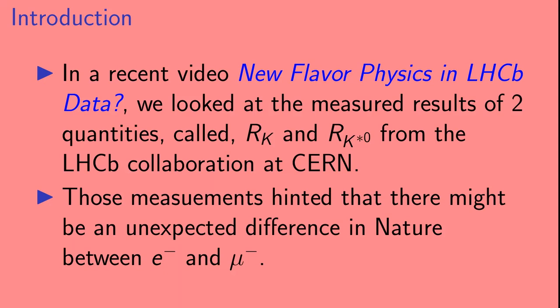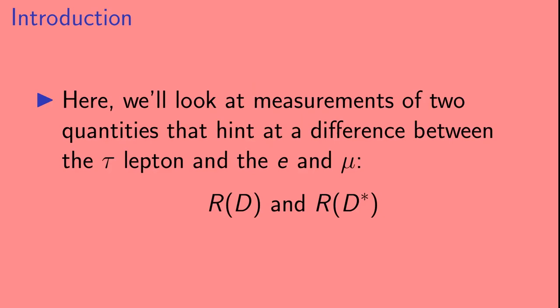In a recent video called New Flavor Physics in LHCb Data, we looked at the measured results of two quantities, called RK and RK star, from the LHCb collaboration at CERN. Those measurements hinted that there might be an unexpected difference in nature between the electron and the muon. Here, we're going to look at measurements of two quantities that hint at a difference between the tau lepton and the electron and muon.